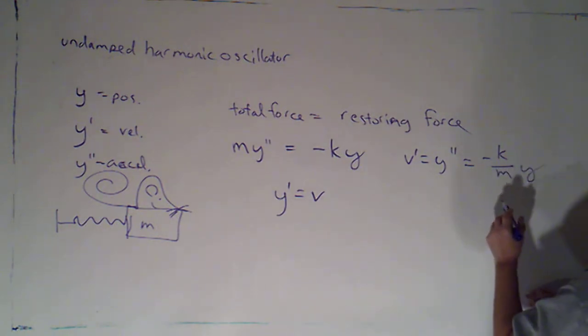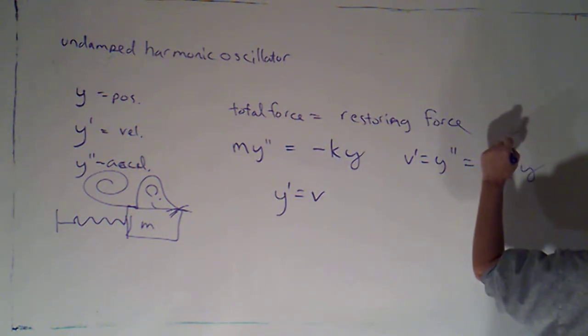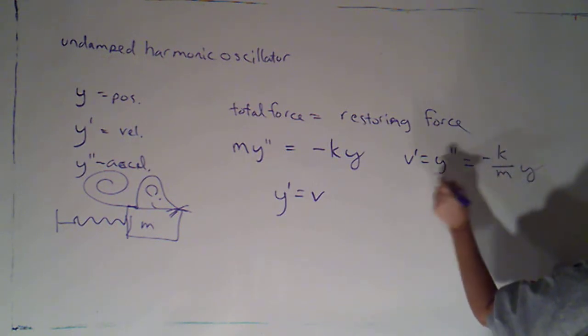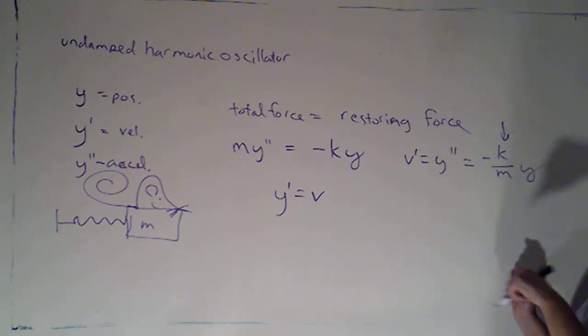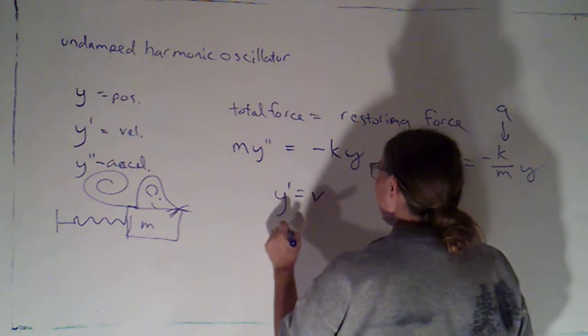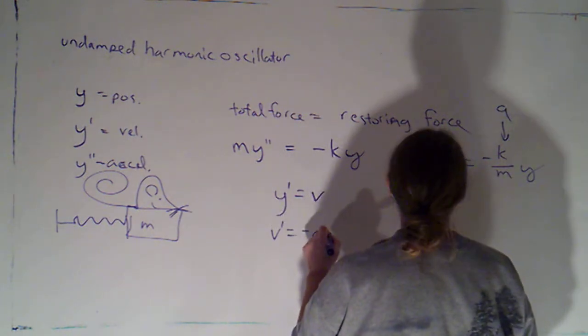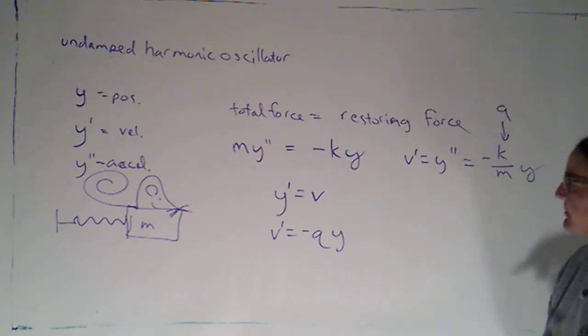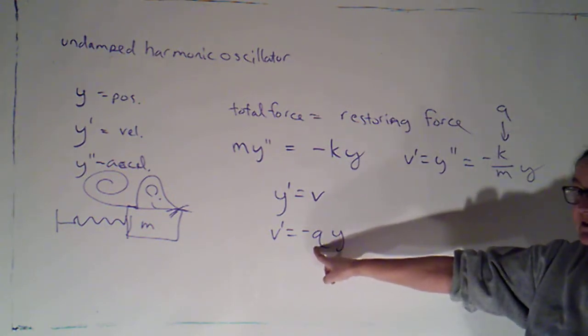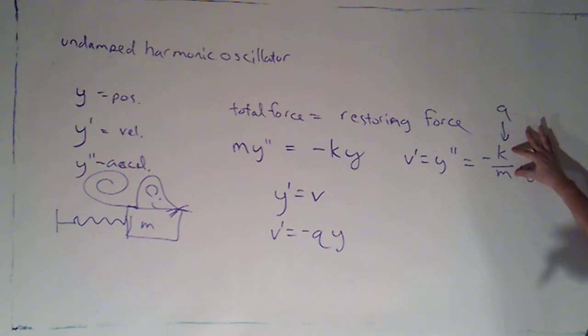We usually will just give this thing a name. I think it's q. So, v prime is negative q times y, where q is a positive parameter, it's the spring constant divided by the mass.